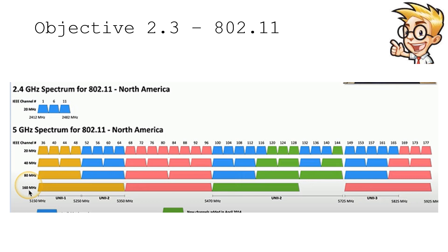You may be using larger bandwidth than 20 megahertz to communicate, because you can get much higher throughput that way. So it may be 40 megahertz, 80 megahertz, or 160 megahertz of bandwidth. You can see that when you get to 160 megahertz, there are really two separate non-contiguous areas available to communicate at such a large bandwidth.